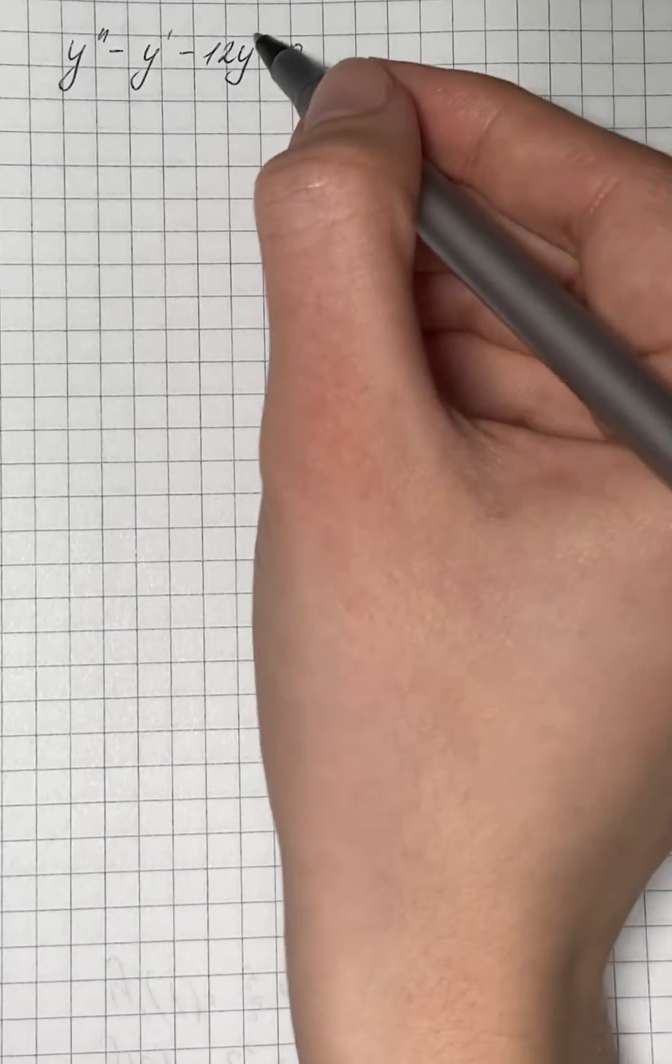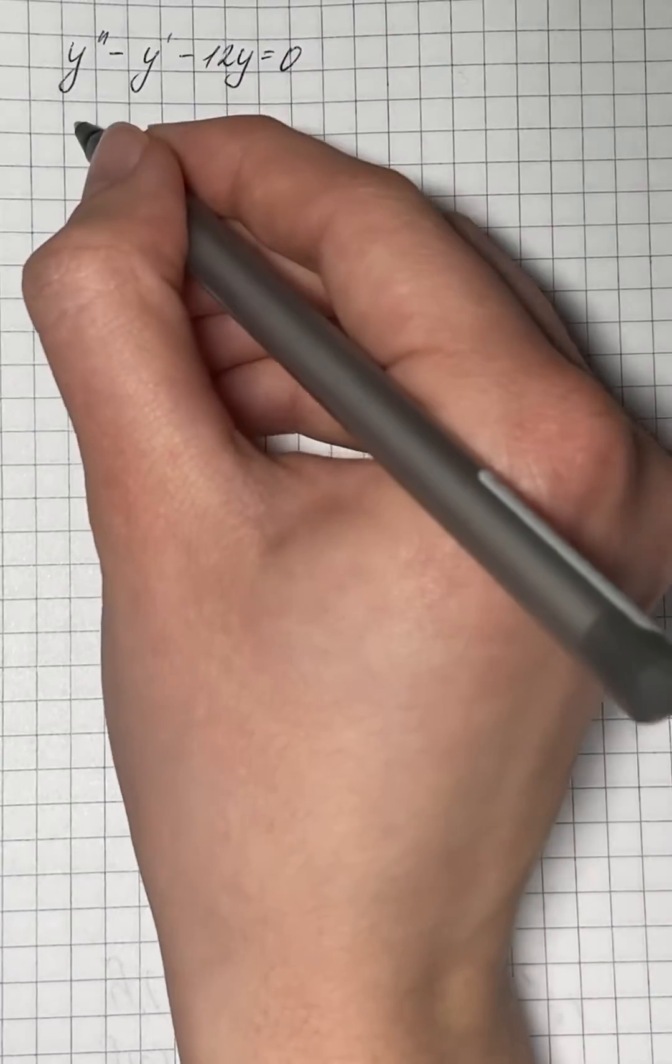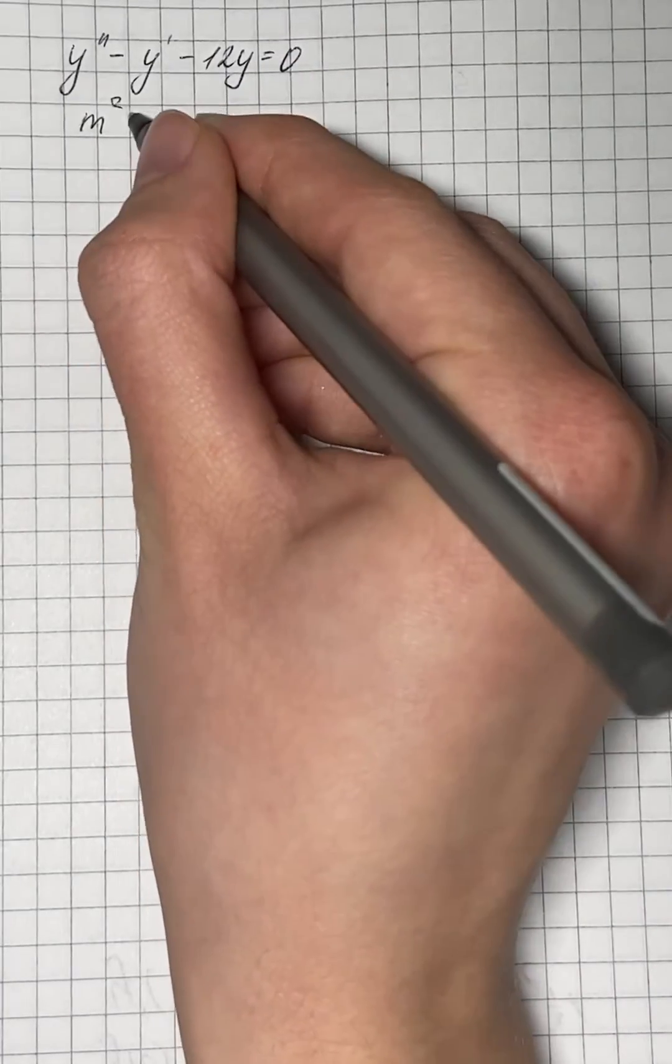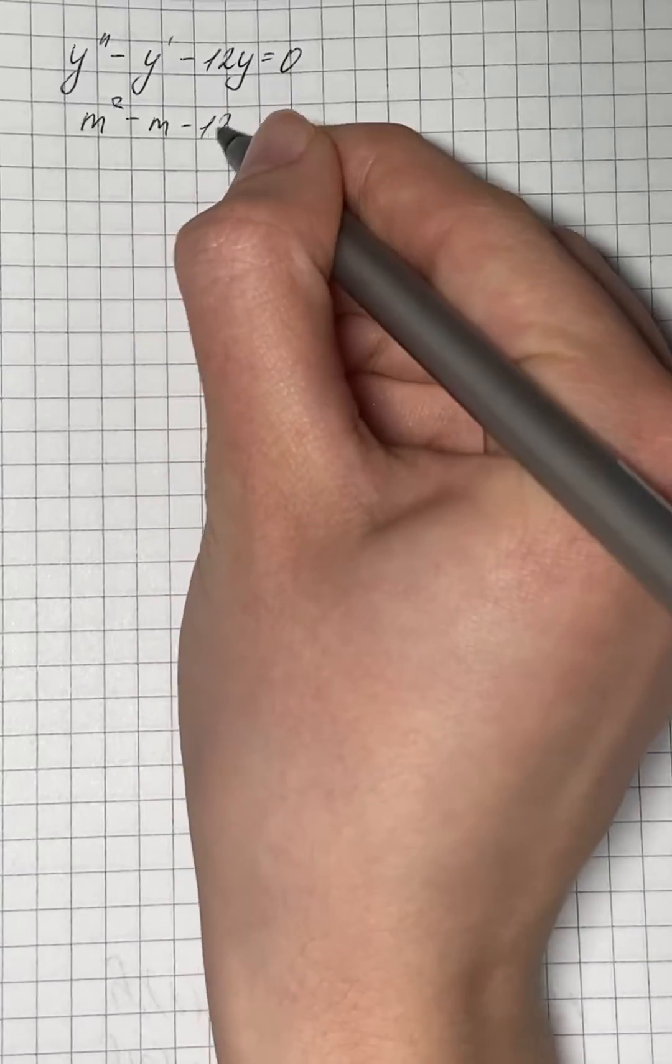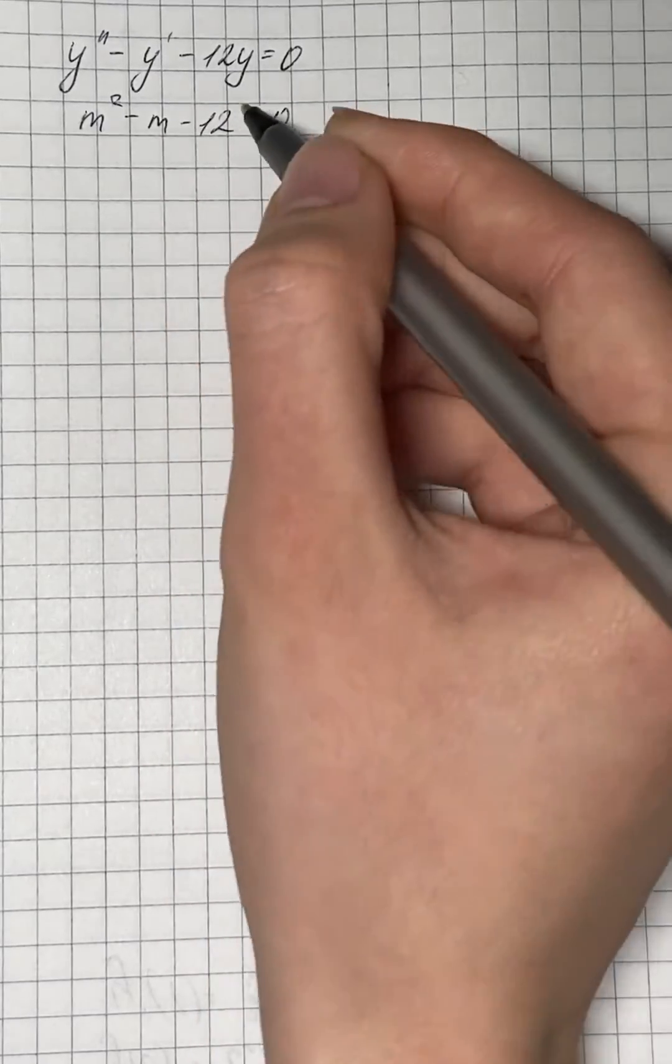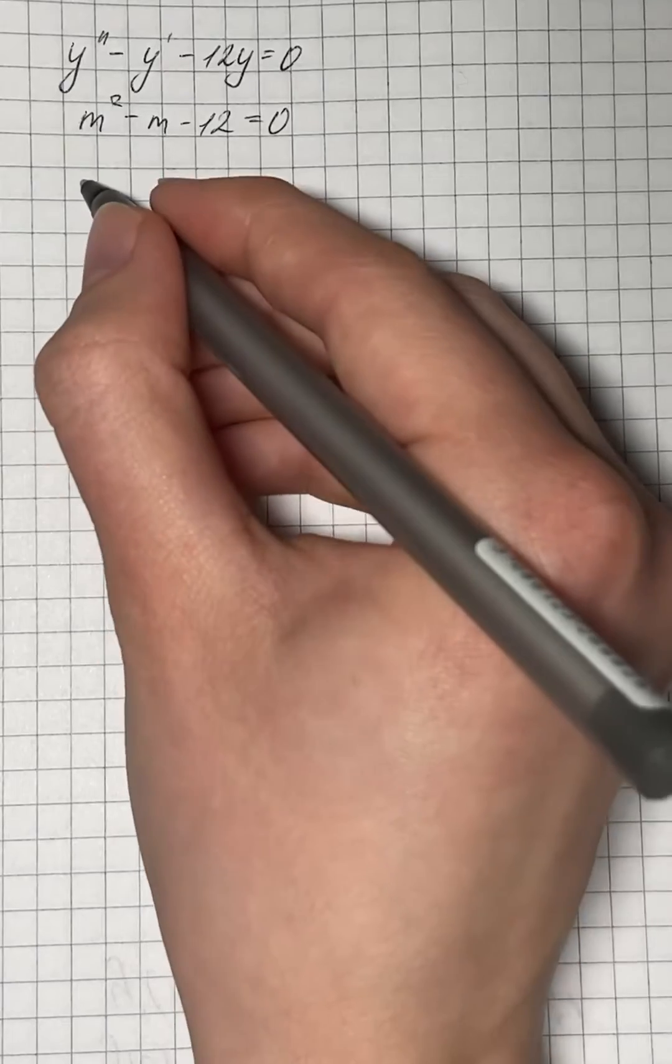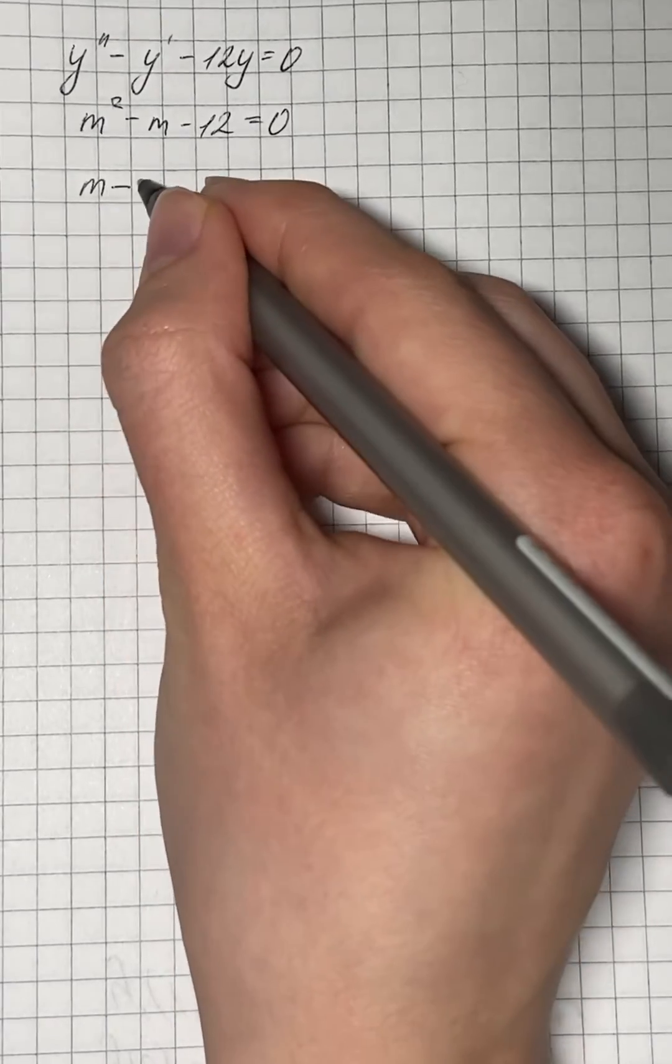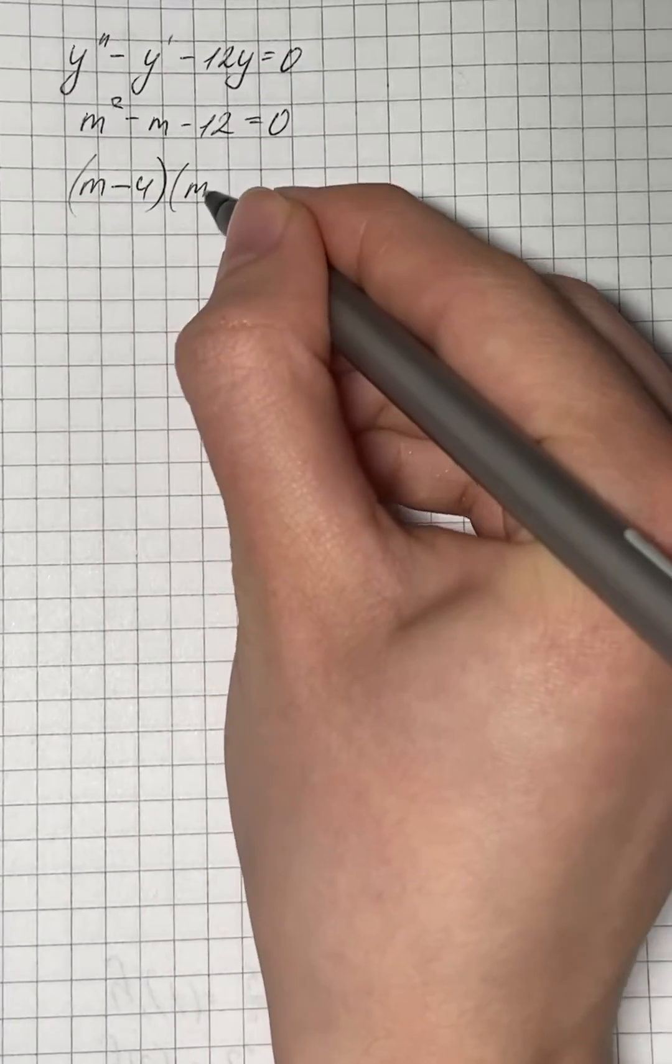We're going to start with an auxiliary equation, which is m² - m - 12 = 0. We can factorize it as (m - 4)(m + 3) = 0.